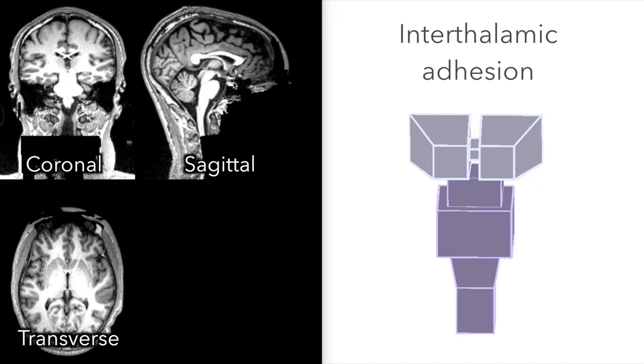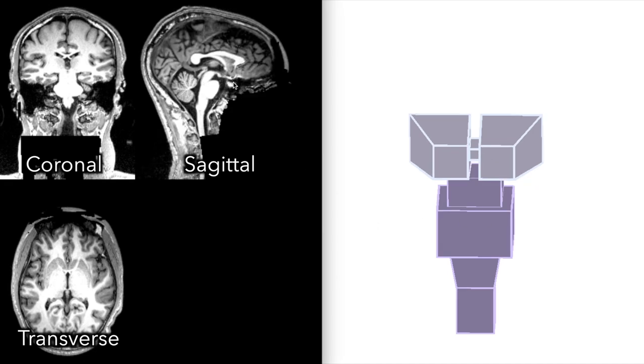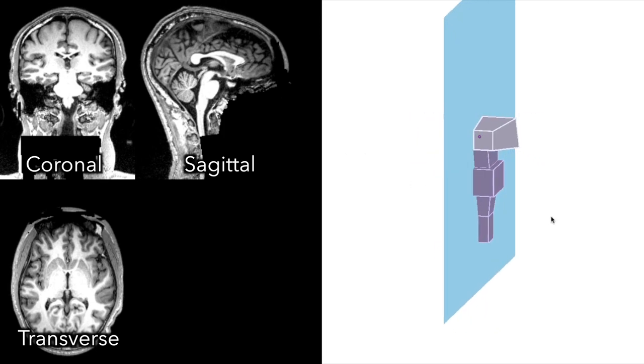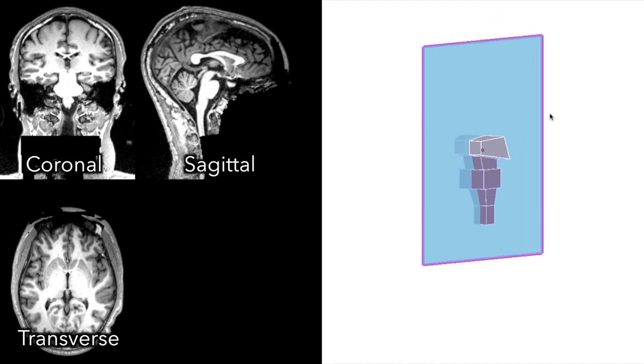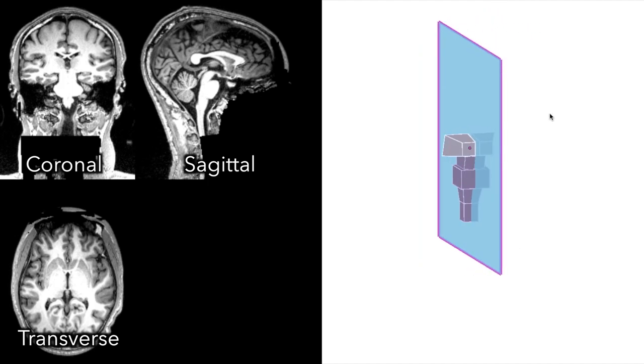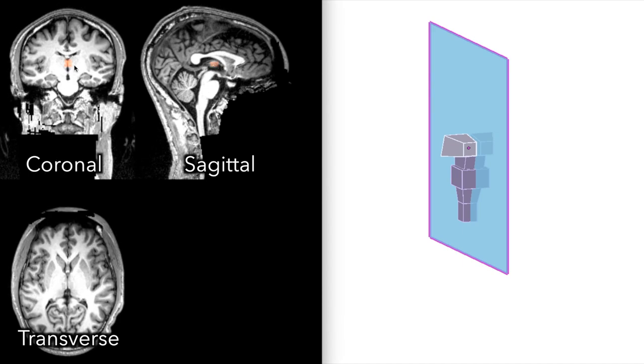This sagittal image here is in the midline of the brain, as if an image has been taken of this plane here. This little part there, that's the interthalamic adhesion, which is here on the coronal plane.